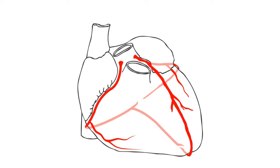Now, the coronary arteries are called end arteries because they do not join any other arteries, which means each particular part of the heart is uniquely supplied by a single coronary artery. Therefore, a blockage in any particular artery will lead to the cessation of circulation to that area of the heart, leading to damage of that part of the heart.